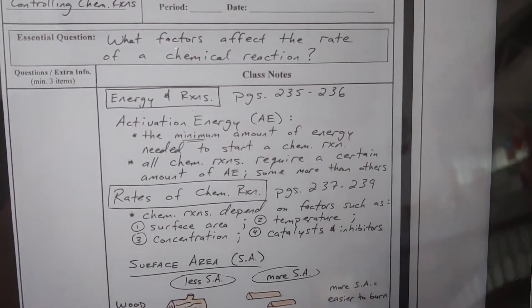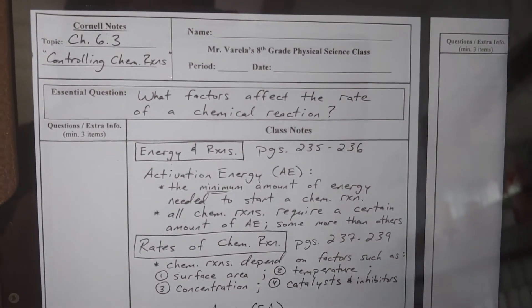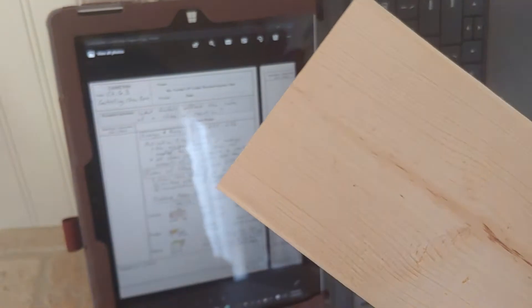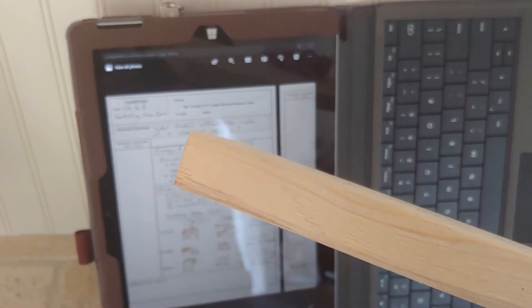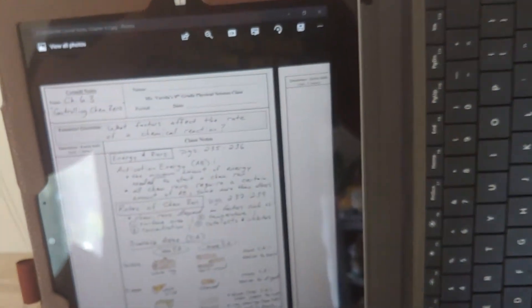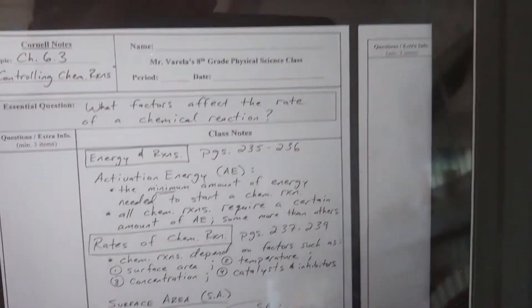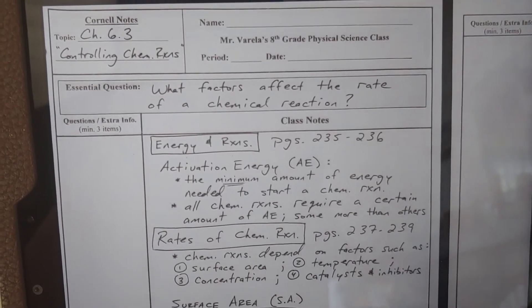First, we have to learn about activation energy — the minimum amount of energy needed to start a chemical reaction. Think of it as when you're trying to light some wood. I have a piece of wood right here. What is the minimum amount of energy needed to get this wood to catch on fire? One match might not do — maybe you need two or three matches, some lighter fluid, or kindling. Burning is a chemical reaction, and simply using one match on a big piece of wood won't do.